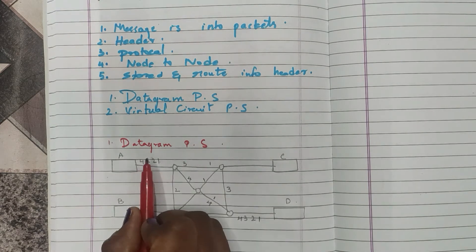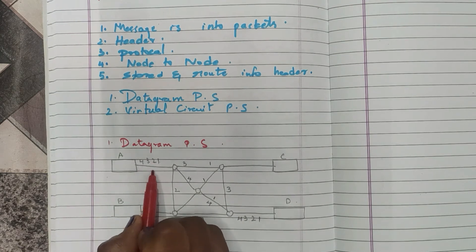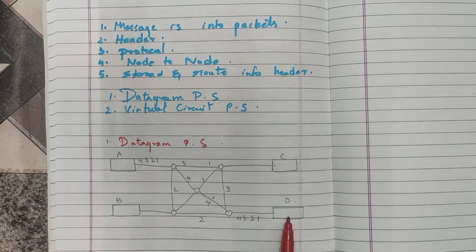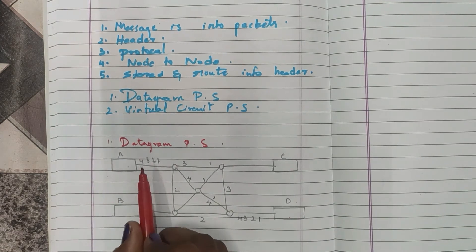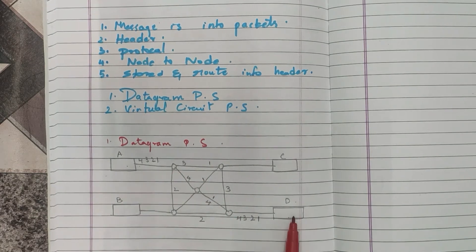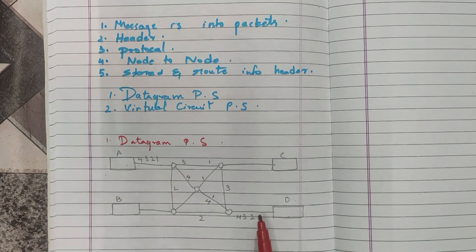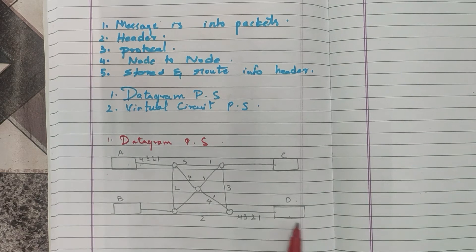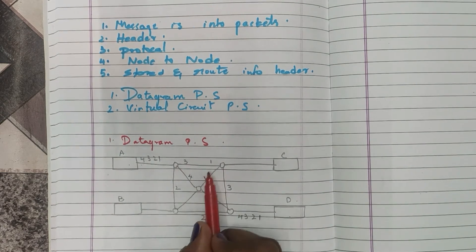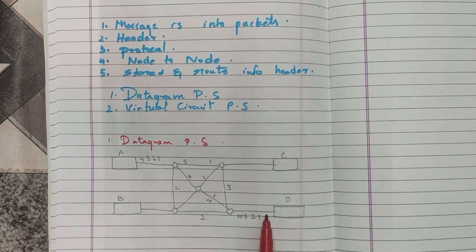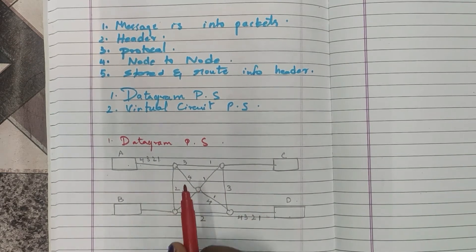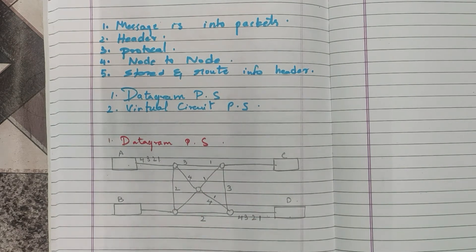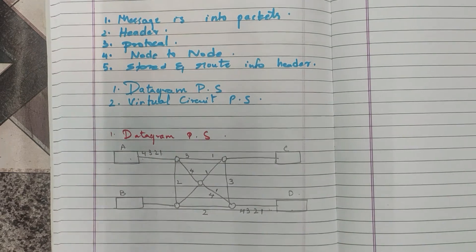For example, in the diagram this datagram approach is used to deliver four packets from station A to station D. All four packets belong to the same message but they may travel different paths to reach the destination. This can cause datagrams to arrive out of order — as you can see, packets 3 and 1 arrive out of sequence. These packets may also be lost or dropped due to lack of resources.